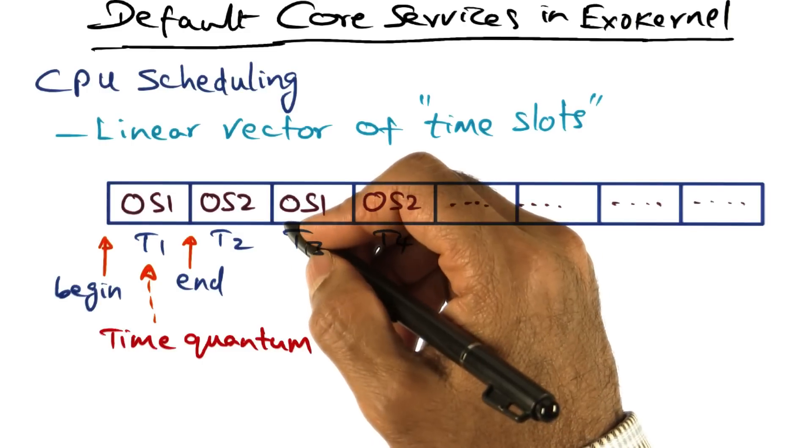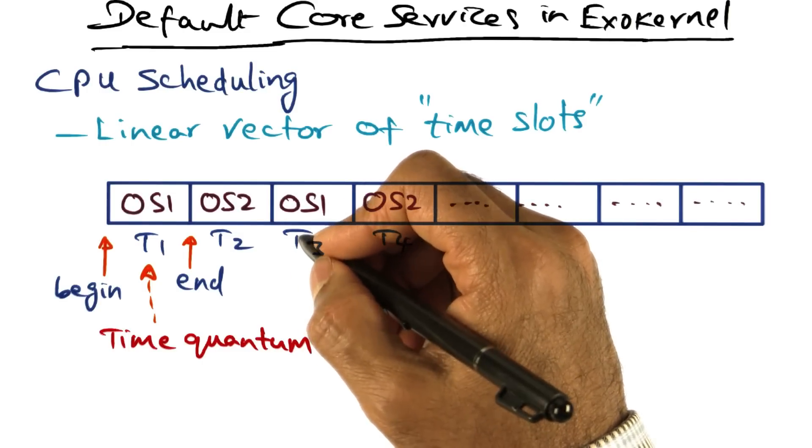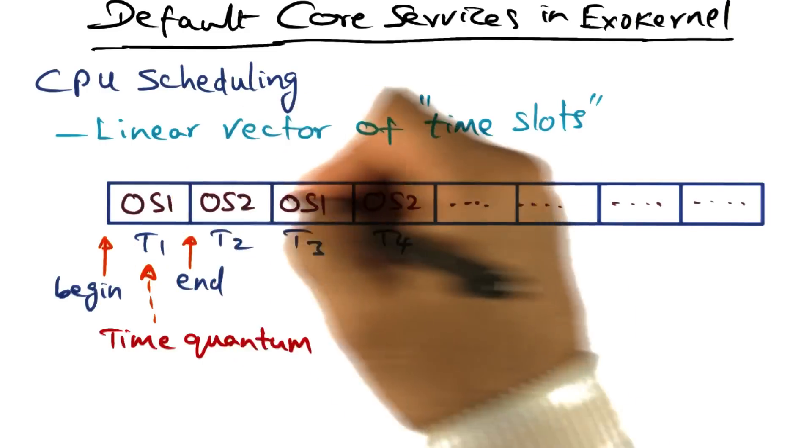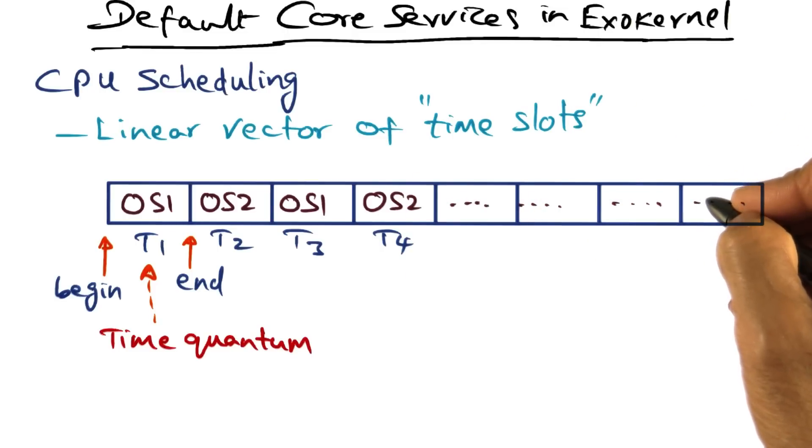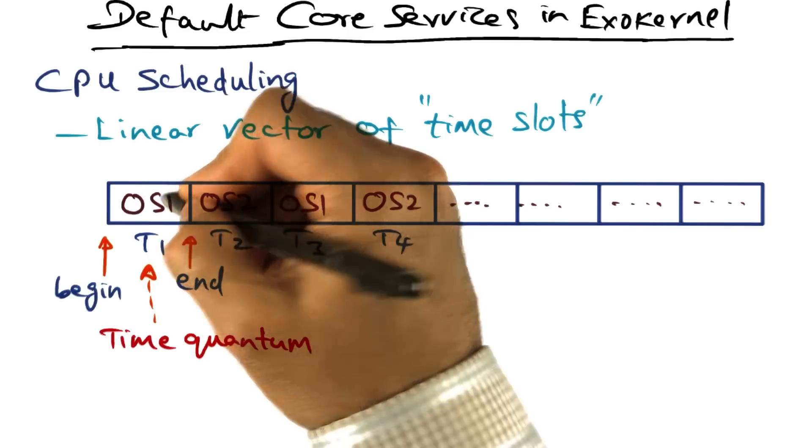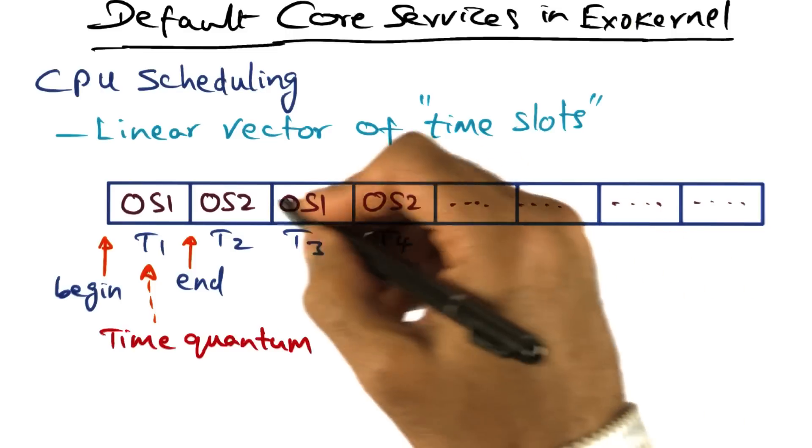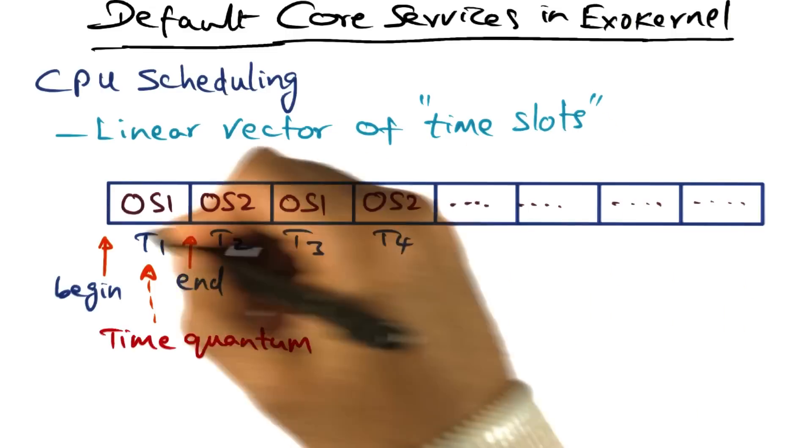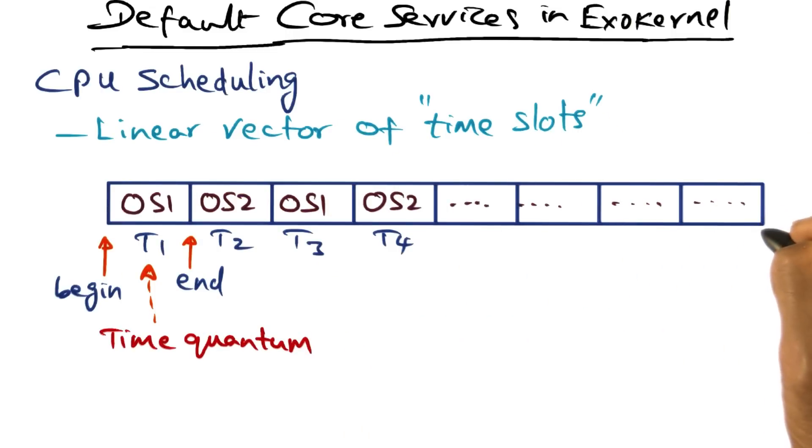Each library operating system gets to mark its time quantum at startup in this linear vector of time slots. For instance, OS1 may say that I get this time slot, I get this time slot, maybe some other time slot, and so on. Similarly, OS2 marks its spots in this linear vector of time slots.